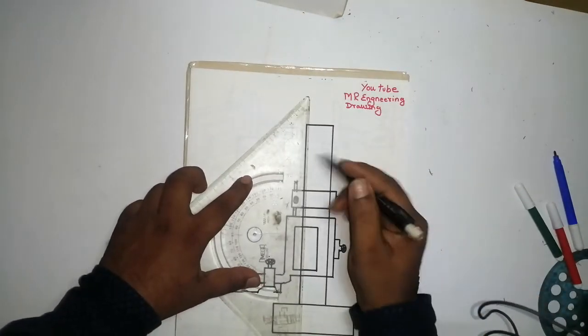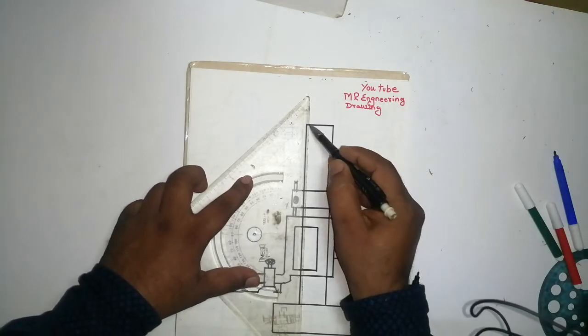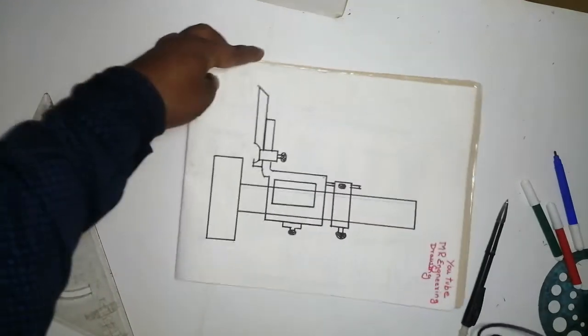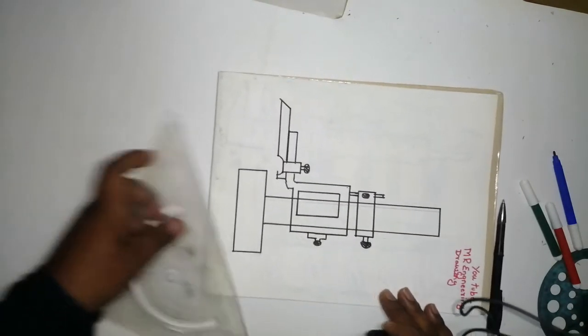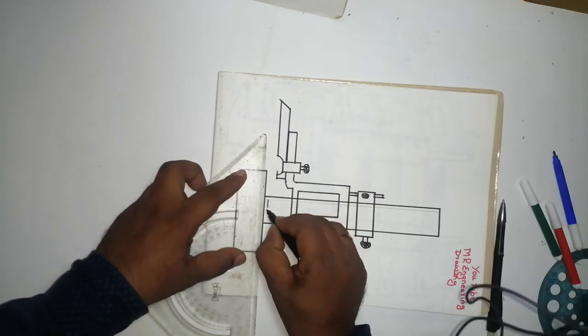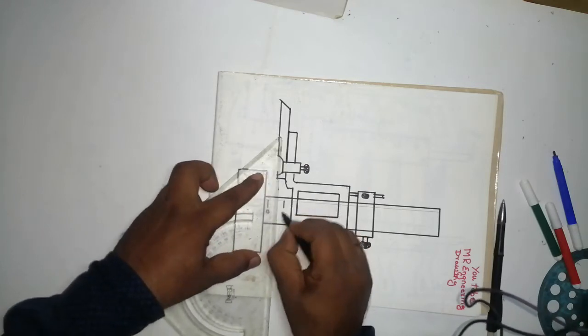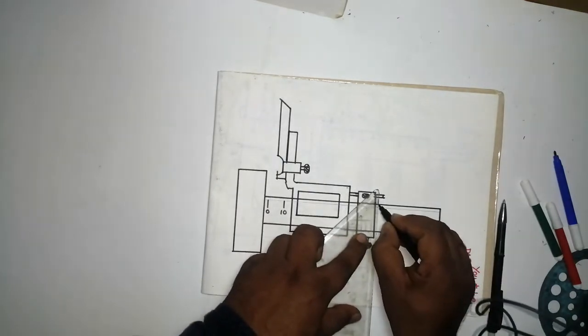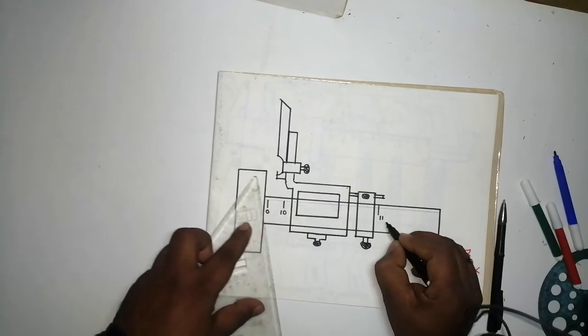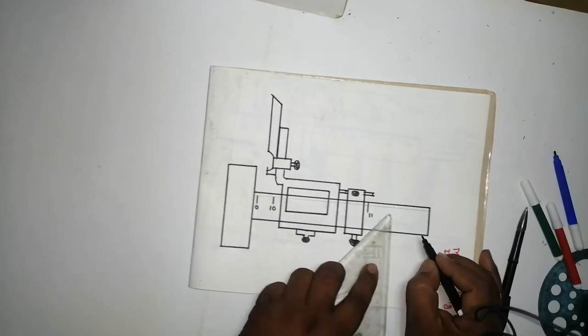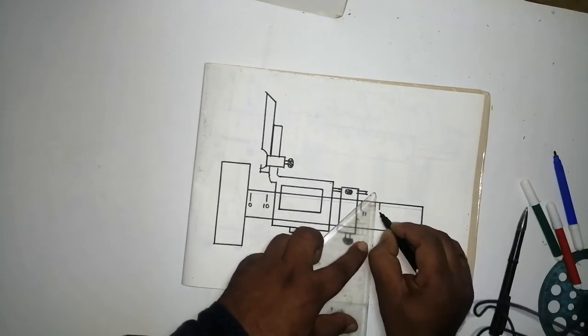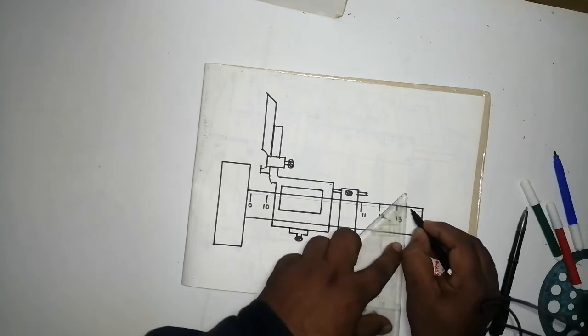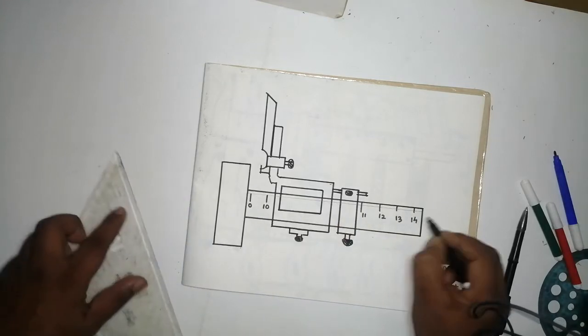Take a simple pencil, one more line like this. Rotate like this. Zero. Ten. Eleven. Ten. Thirty. I have taken 14 centimeter.